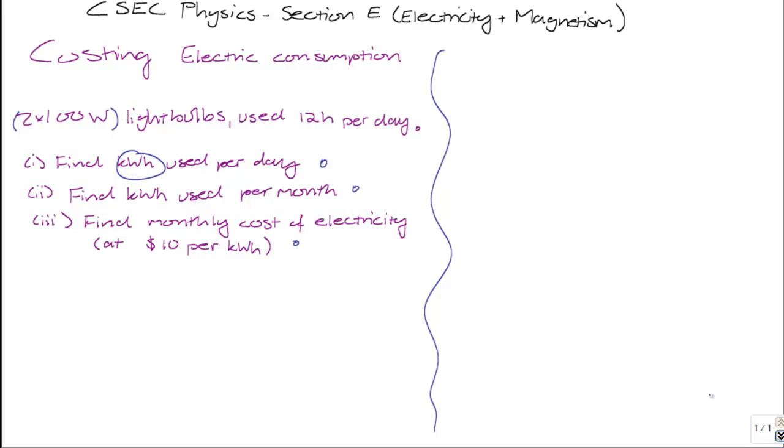So we're told that each of the light bulbs uses 100 watts of power, and we have two of these light bulbs, which means that the total power consumption is equal to 200 watts. Now, since electricity is costed in units of kilowatts, we need to convert this value to kilowatt.